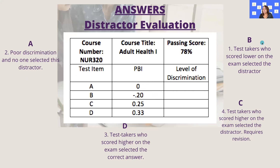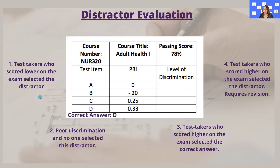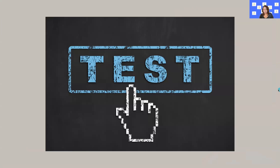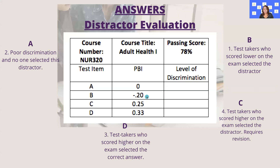For option B, if you matched number one — test takers who scored lower on the exam selected the distractor — you are correct, because it is a negative PBI of negative 0.20. A negative PBI indicates an effective distractor that attracts the test taker who does not know the content well to select the incorrect answer. Since the correct answer is D, test takers who scored lower selecting B is exactly what we expected.